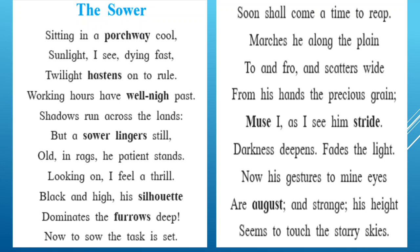Let's check out the poem in detail. 'Sitting in a porch way cool, sunlight I see dying fast.' One evening, the writer sat in her porch way. Porch way means the veranda or a covered shelter in front of a building. Victor Hugo observed the activities of the farmer — it was the evening time, sunlight I see dying fast, meaning the night was close. Twilight hastens on to rule — twilight is the time when the day is about to end and night is about to begin. 'Working hours have well-nigh passed' — well-nigh means almost — the timing of working hours had almost finished, but that farmer was still working hard.